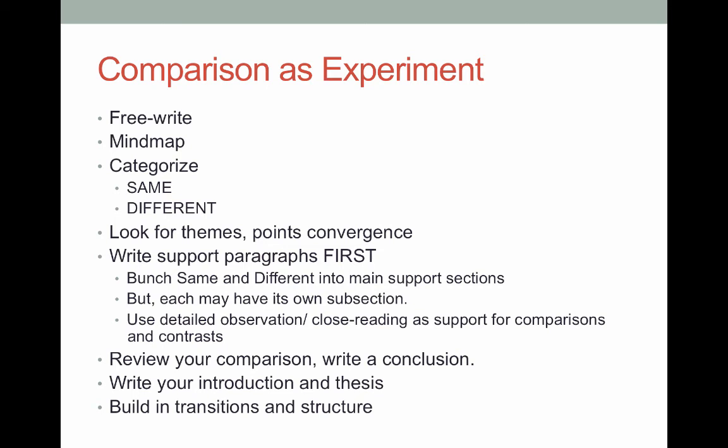Once you have your main supports or main areas of close reading mapped out, review over them, see what you came across, and then write your conclusion. If you're thinking about this as an experiment, the mind mapping, the categorizing, the looking for themes, the setting up into same-and-different paragraphs — that's the experiment part. That's the part where you're doing your investigation. You can't know how things turned out until you've actually conducted the comparison, so that's why this is the ideal time to write the conclusion. A lot of times people think they have to know the answer before they start — you don't necessarily have to do that. Oftentimes that leads you into difficult situations where you're trying to write your way out of a corner built from preconceived notions. Let the comparison happen first, then come back and figure out what's significant about it.